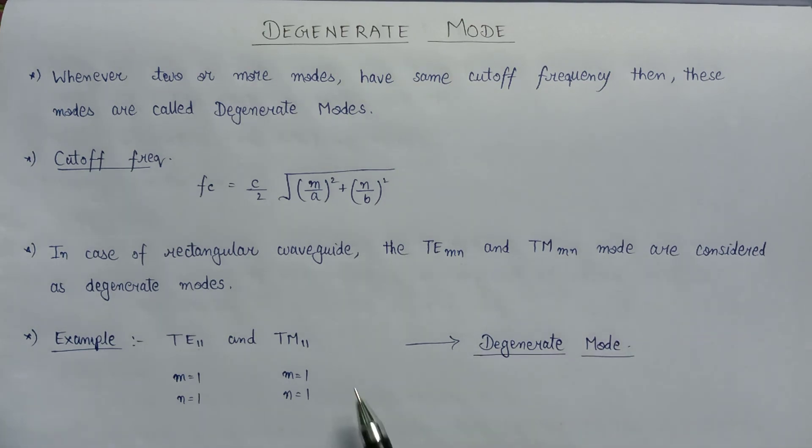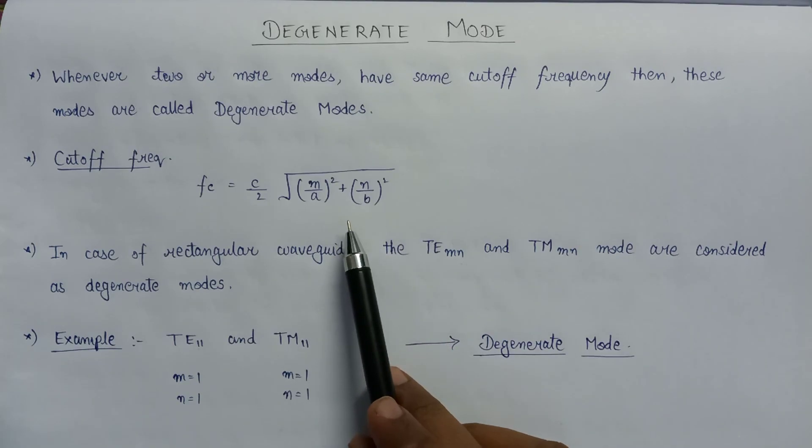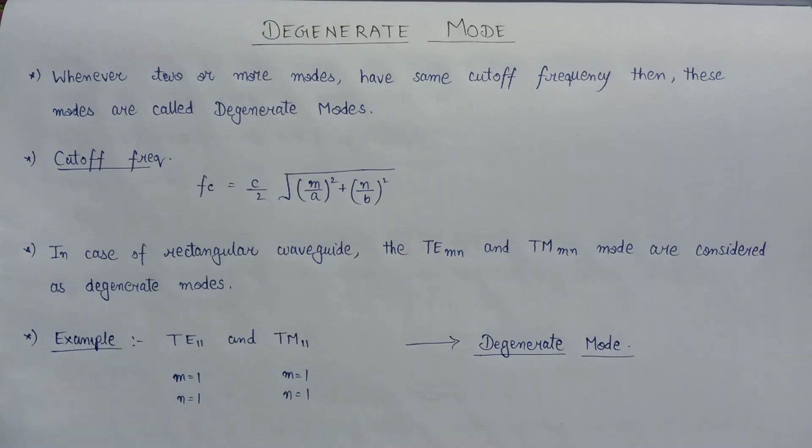So we can easily find out the pair of degenerate modes on the basis of the cutoff frequency with the help of this formula. This is the basic introduction about the degenerate mode. If you like my videos then do subscribe my channel and please hit the like button. Thank you.